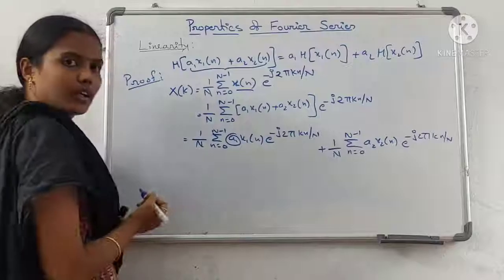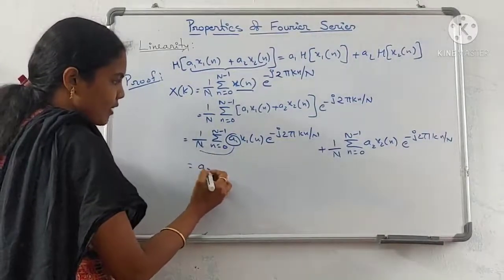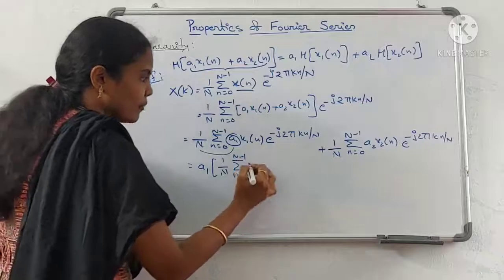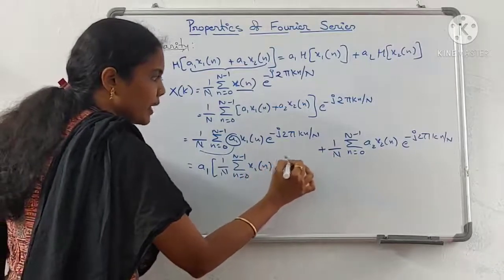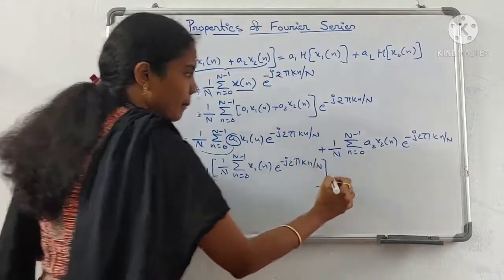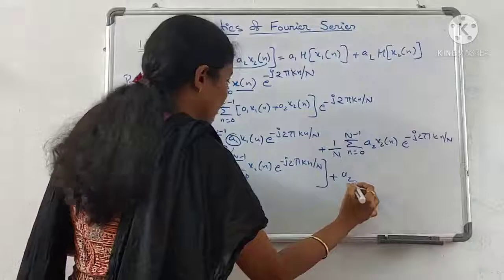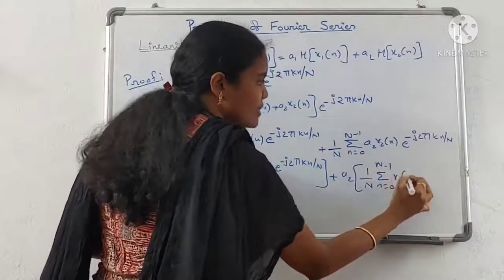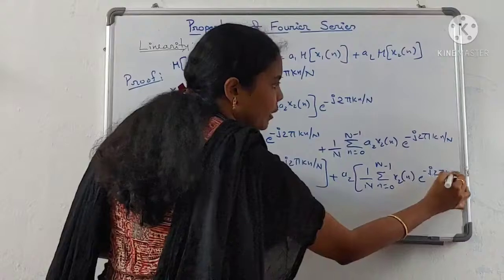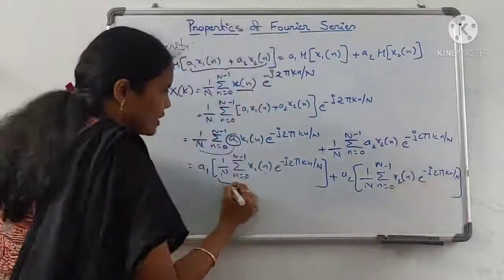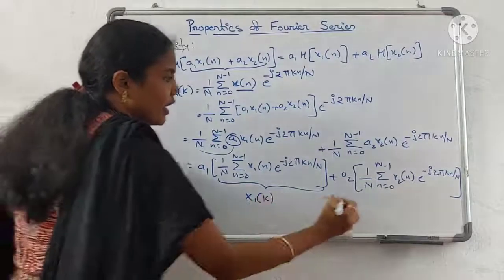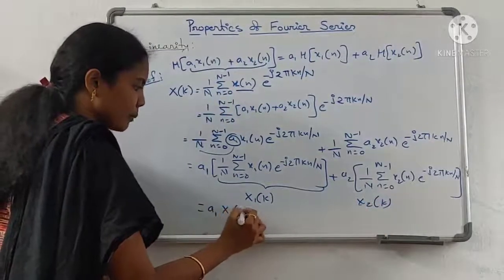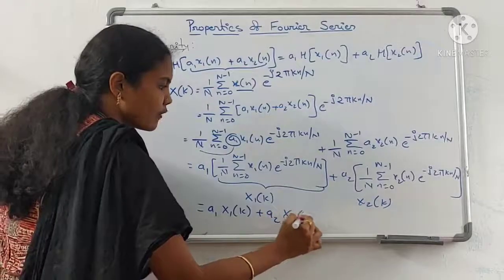Since a1 and a2 are constants, take them out. That gives a1 into 1/N summation from n=0 to N-1 of x1(n) e^(minus j 2 pi k n / N), plus a2 into 1/N summation from n=0 to N-1 of x2(n) e^(minus j 2 pi k n / N). This is nothing but X1(k) and X2(k), so the result is a1 X1(k) plus a2 X2(k).